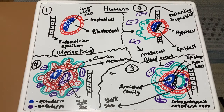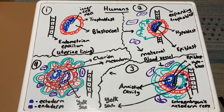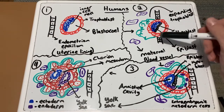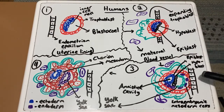For humans, fertilization occurs in the oviducts, and development of the embryo occurs in the uterus. Before gastrulation, implantation occurs, which is initiated by the trophoblast. After that, the entire blastocyst enters the endometrium — in step two it begins to enter, and by step three it has fully entered.